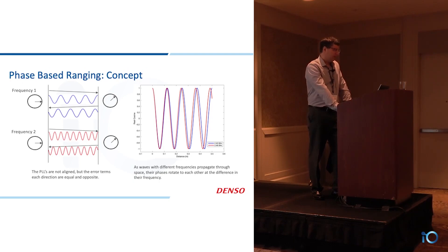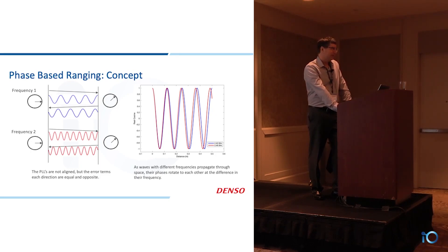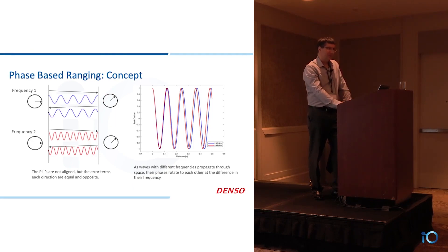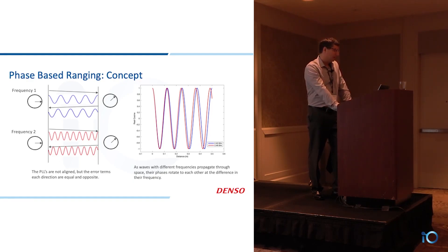Why we need to repeat this across multiple frequencies: a very precise phase measurement gives you an answer that's very precise but also ambiguous, because it's a modulo equation — phases wrap around every two pi or 360 degrees. So in terms of a wave, when you get a distance on a single frequency and it says six centimeters, it could be six centimeters, or 18 centimeters, or 24 centimeters, and so on — there's an ambiguity in the distance.